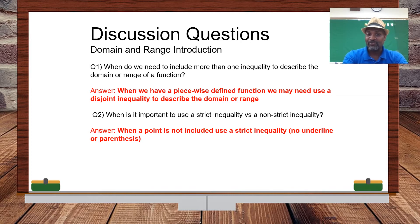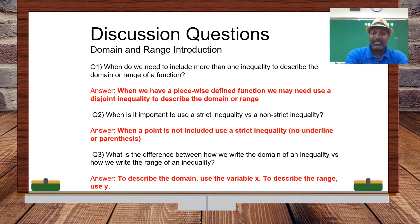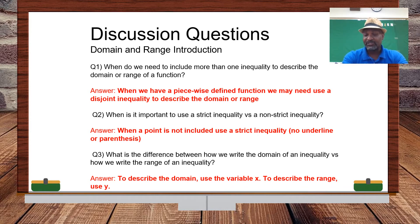When you underline the inequality symbol, you are including the endpoint. In interval notation, a bracket means the endpoint is included and a parenthesis means it is not included. Since the domain is the set of all X values, we use the variable X. Since the range is the set of all Y values, we use the variable Y. Note that in interval notation you don't need to use any variable — just describe the correct interval.